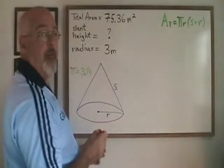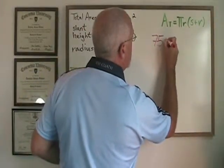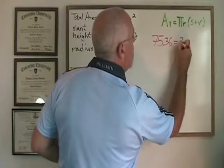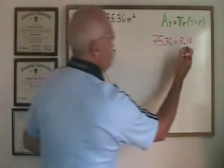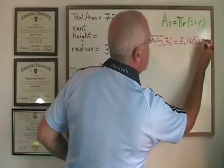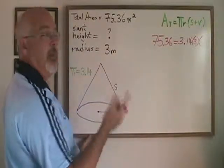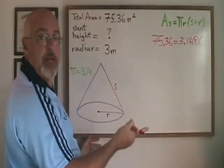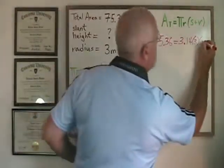AT is replaced by 75.36. Pi is 3.14. Radius is 3. And slant height is our unknown so we will just use s as a variable for it. We have to put s plus the radius again, s plus 3.